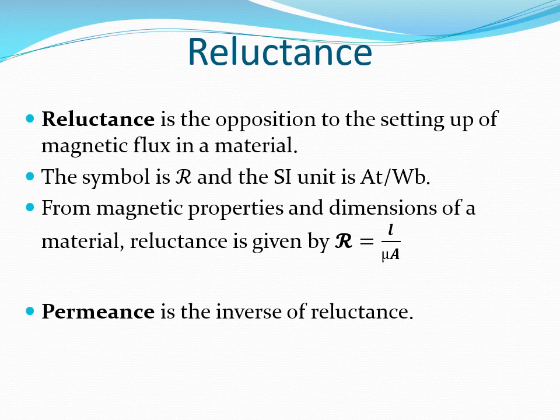Reluctance is the opposition to the setting up of magnetic flux in a material — you can liken it to electrical resistance. The symbol is a modified R and the SI unit is the ampere-turn per Weber. We can obtain the amount of reluctance from the dimensions and magnetic properties of a material using the formula: reluctance equals L over mu times A, where L is the mean length of the path, A is the cross-sectional area, and mu is the permeability. Permeance is the inverse of reluctance — you can liken it to electrical conductance.